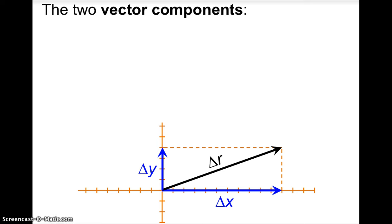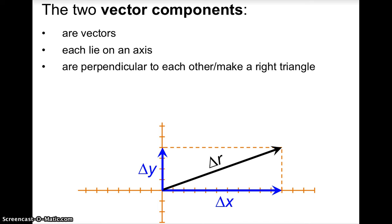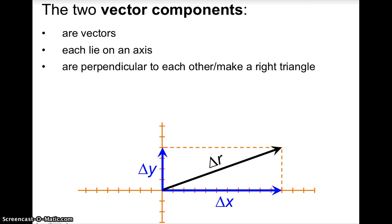Delta x and delta y — these components — are themselves vectors. They're not just lines; they have arrow tips, so they are vectors. Each lies on an axis. They are perpendicular to each other. They can make a right triangle, and you make that right triangle by sliding delta y over and connecting it. So the two components, delta x and delta y, are perpendicular to each other.